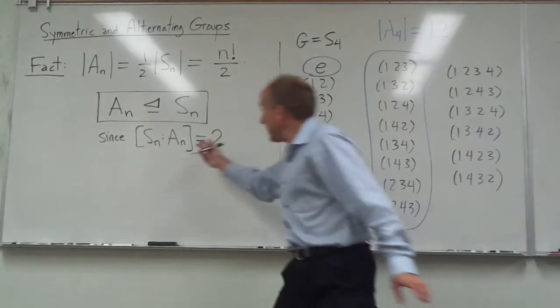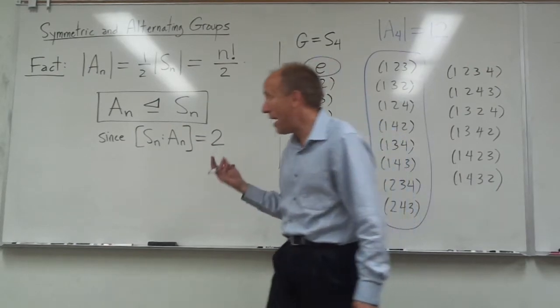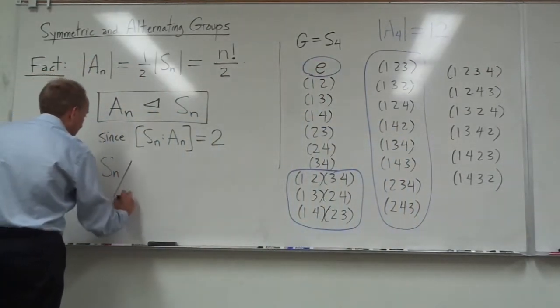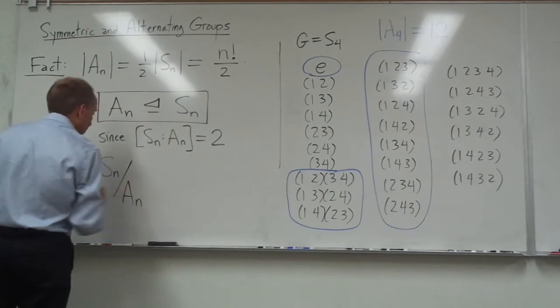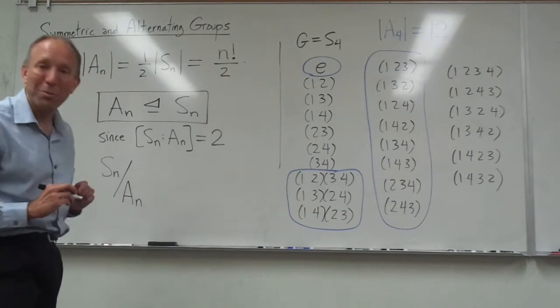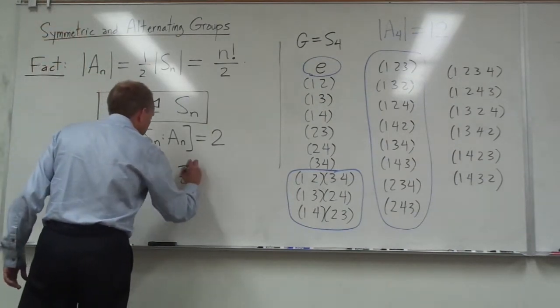And that is, of course, since one of the ways that we come up with a normal subgroup is if we have a subgroup of index 2. The alternating group has index 2 within the symmetric group. And in fact, we can even immediately write down this quotient group.